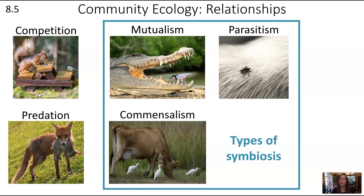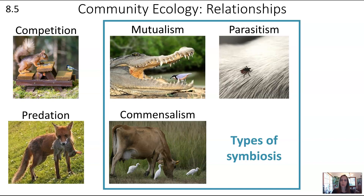Mutualism, parasitism, and commensalism are all considered types of symbiosis — a close relationship between two species. In mutualism, both organisms benefit. In parasitism, one benefits and the other is at a disadvantage. In commensalism, one benefits and the other is not affected. Competition and predator-prey relationships are important in community ecology but are not technically types of symbiosis. That's the end of Unit 8.5 on community ecology.